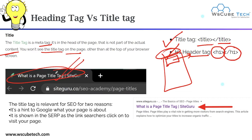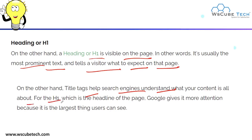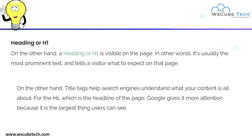Your title tag is visible on your search engine result page and helps the search engine understand what your content is about. Your H1 tag is visible on the web page and is usually the most prominent text that tells the visitor what to expect on that page. For the H1, which is the heading of the page, Google gives it more attention because it is the largest thing a user can see on your web page.